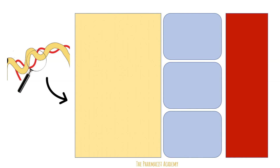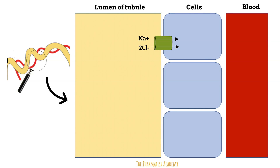So this is how it looks when we zoom in. We have the tubules here, the cells that line it, and the blood. In normal circumstances, the sodium chloride co-transporter facilitates the reabsorption of sodium and chloride from the tubule lumen. This area accounts for about 7% of total sodium reabsorption. Once the sodium and chloride enter the cell, the sodium moves out of the cell through the sodium-potassium ATPase, where three sodiums move into the blood in exchange for two potassiums.